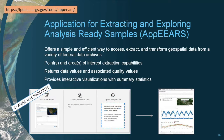The APPEARS tool from the Land Processes DAC offers a simple and effective way to access and transform geospatial data from a variety of federal data archives. APPEARS enables users to subset geospatial datasets using spatial, temporal, and band or layer parameters. This tool utilizes GIS server technology to enable a single point of access to all services, distributing a wealth of data.